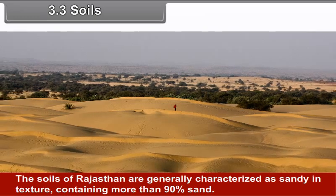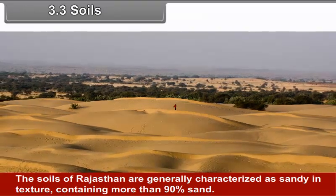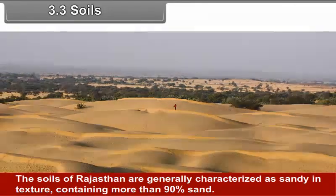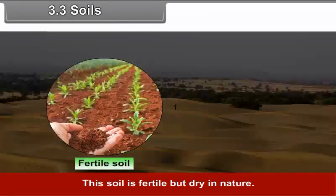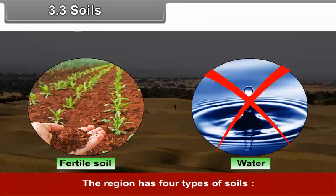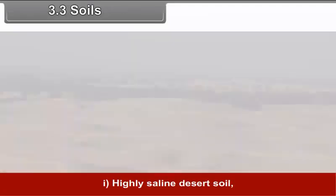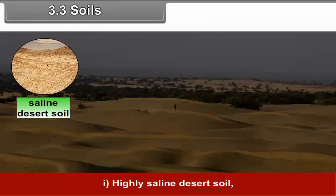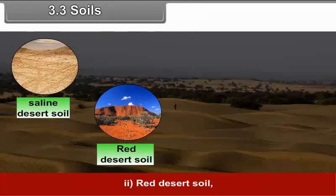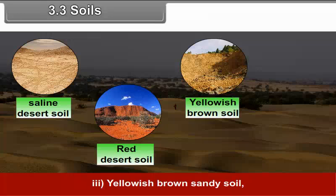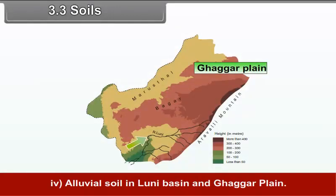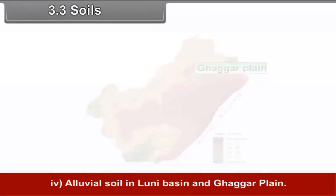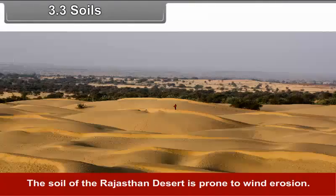3.3 Soils. The soils of the Rajasthan plain are generally characterized as sandy in texture, containing more than 90% sand. This soil is fertile but dry in nature. The region has four types of soils: highly saline desert soil, red desert soil, yellowish brown sandy soil, and alluvial soil in Luni Basin and Gagar Plain.